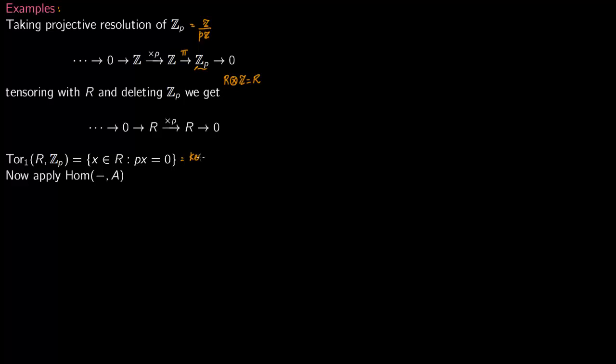So this is kernel of this map over image which is 0, and that is precisely what we are writing. This is nothing but description of this kernel map, all the x element in R such that P times x is 0.